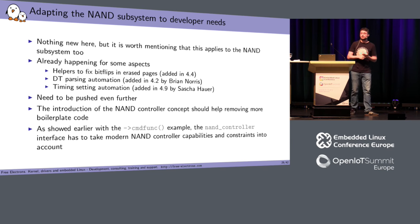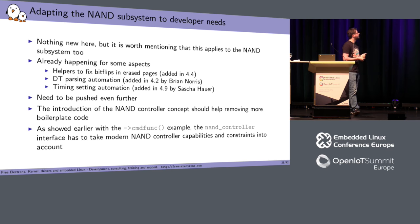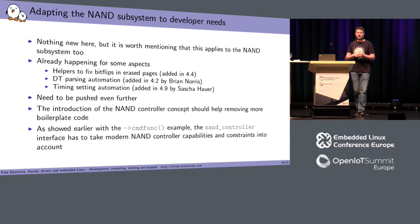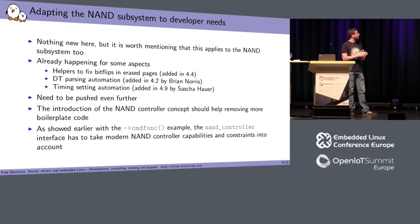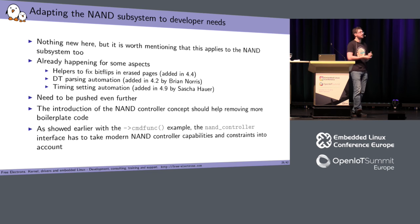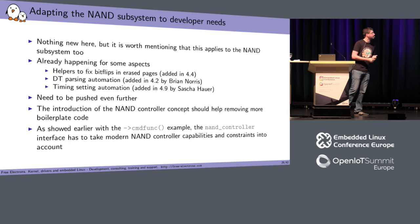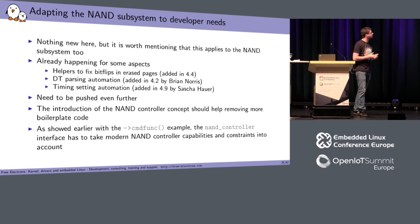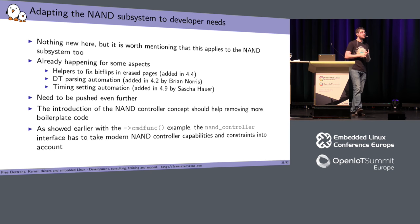We are also trying to adapt the framework to developer needs. Some people complained they couldn't test whether bit flips were present in erased pages, so instead of having the same block of code in all drivers, we decided to provide helpers for that. Brian also did some work to automate DT parsing, which removes a lot of boilerplate code in all controller drivers. We recently also automated timing settings, which removes a lot of code in some drivers. We need to continue and push that even further.